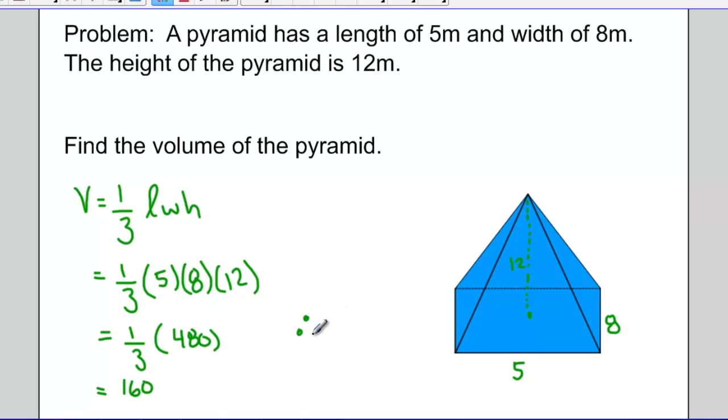And 480 times one-third becomes 160. So this pyramid that has a length of 5 meters, a width of 8 meters, and a height of 12 meters has a volume of 160 meters cubed. Remember that volume units are cubic units.